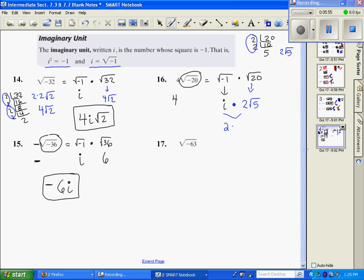Multiplying these two together, I have 2i square root of 5, and then I have this 4 that was sitting out front. So I multiply those, and I'm going to say 4 times 2 is 8i, and then you have square root of 5.